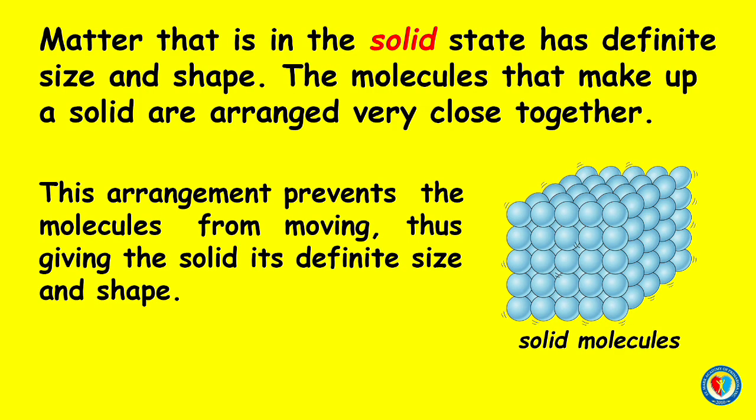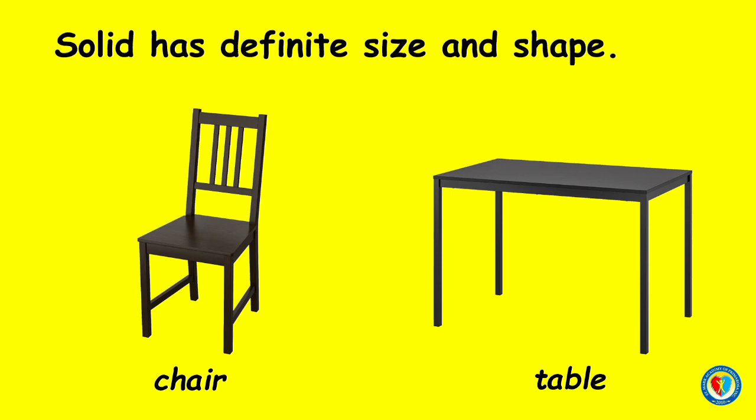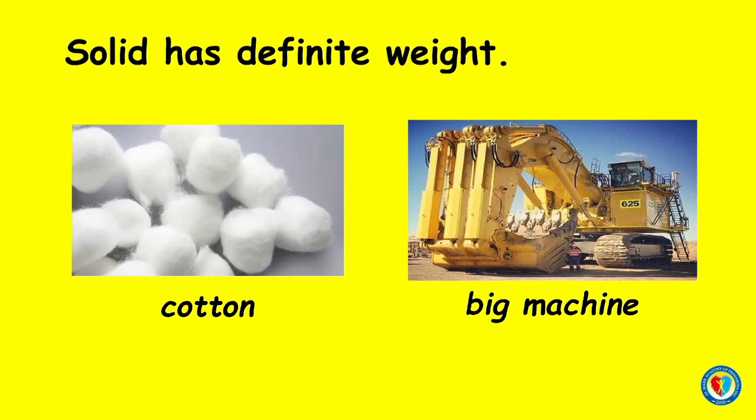Matter that is in the solid state has definite size and shape. The molecules that make up a solid are arranged very close together. This arrangement prevents the molecules from moving, thus giving the solid its definite shape and size. Examples are chair and table. A solid also has definite weight. Solids like cotton are light, while solids like big machines are heavy.